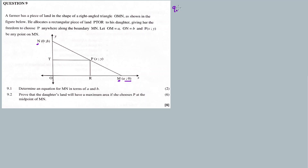9.1: Determine an equation for M-N in terms of A and B. This question wasn't that difficult. We need to find the equation for M-N, this straight line. We know that y = mx + c, so we need to find the gradient m and the y-intercept c. Since M-N is a straight line, we need the equation in the form y = mx + c.